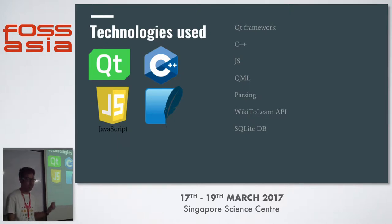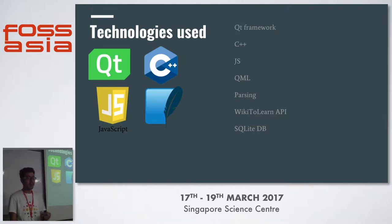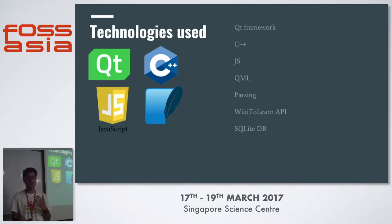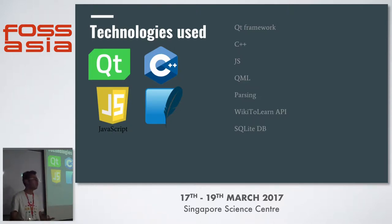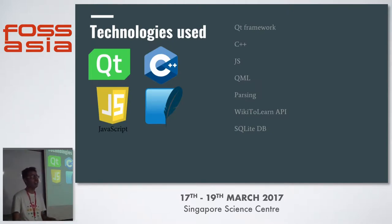The next technologies used are JavaScript and QML for creating the UI for the application, because Qt widgets are not really compatible with Android or mobile devices. So we used QML and Qt Quick along with JavaScript to build the UI. We also use an SQLite database to keep a record of all information, like how many images are downloaded and whether a page is fully synced with Wiki2Learn.